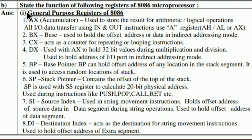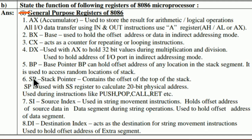In this video we are going to see the function of registers of the 8086 microprocessor. The first category is general purpose registers of 8086. It has AX, BX, CX, DX, BP, SP, SI, and DI.